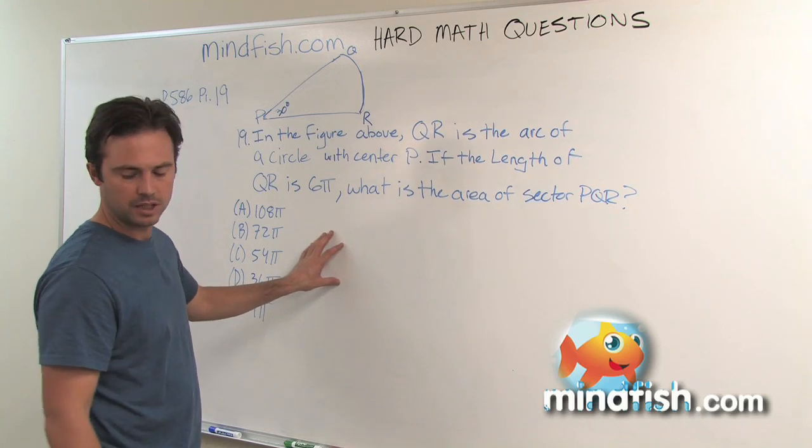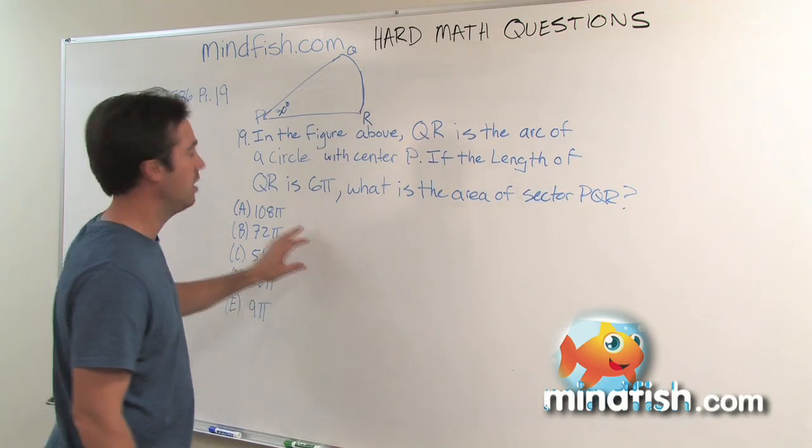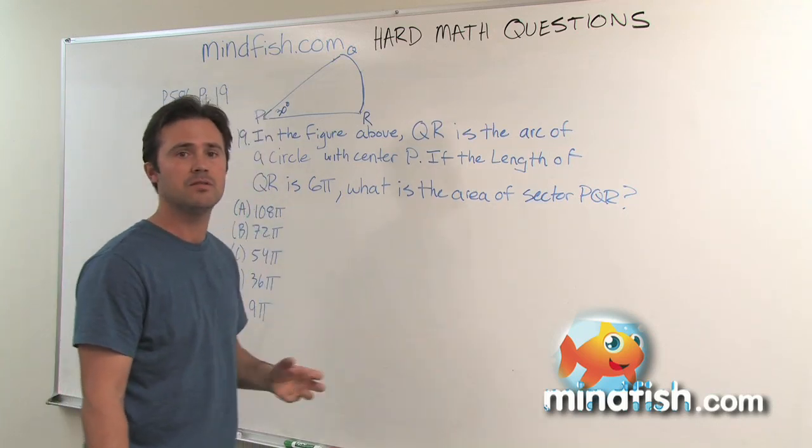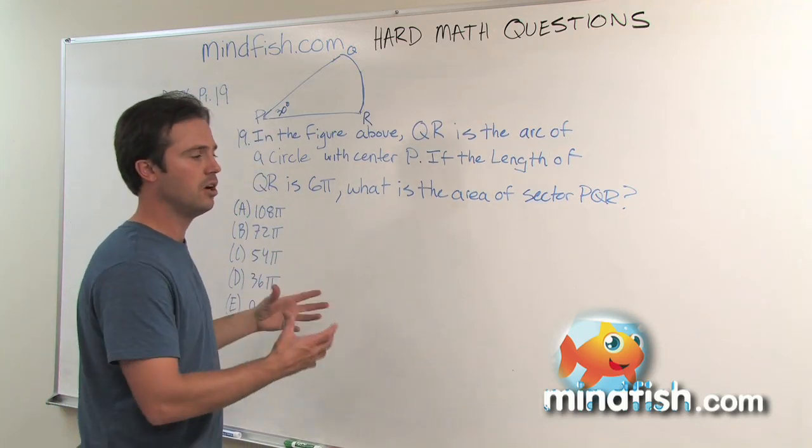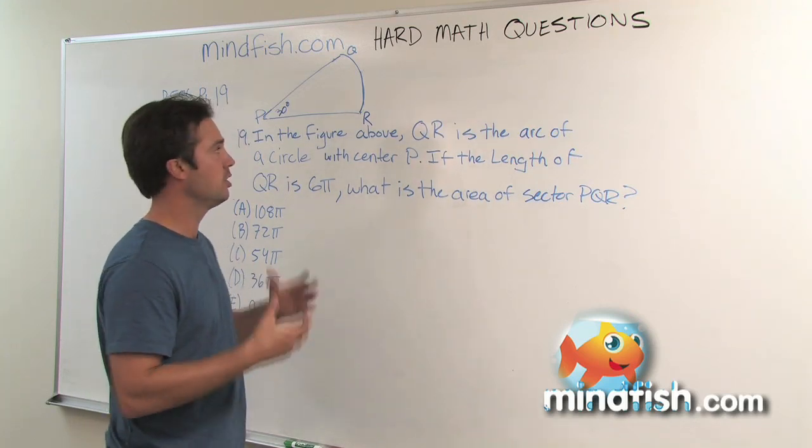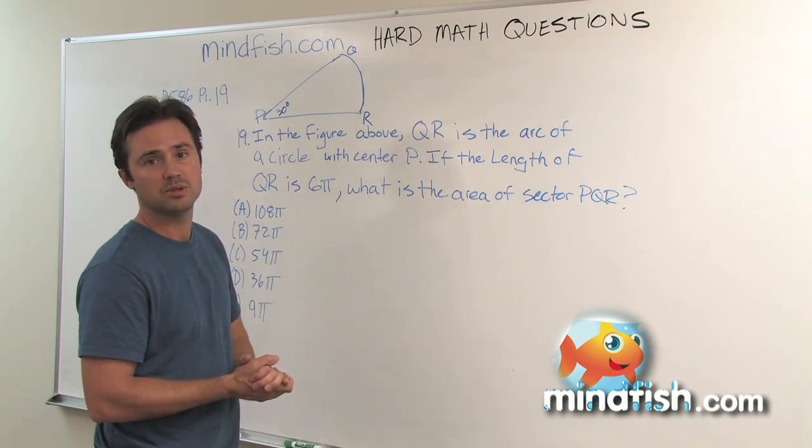This question is question 19 on section 3 page 586. It was one of the last two math questions on a section, so you expect it to be fairly difficult. First I'm going to solve it kind of with the more precise way and then I'm going to show you a good way to estimate if you weren't able to do that.